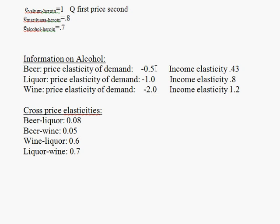The price elasticity of demand for beer is inelastic because the absolute value is less than one. Liquor is unit elastic, and wine is elastic for price elasticity of demand. For beer, the response in quantity is going to be half as large as the percent change in price — for example, a 10% increase in price leads to a 5% decrease in quantity demanded. For liquor, a 10% increase in price leads to a 10% decrease in quantity demanded. For wine, a 10% increase in price leads to a 20% decrease in quantity demanded.